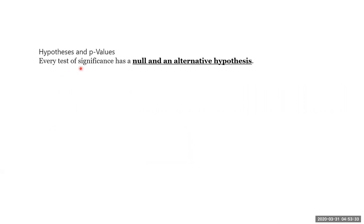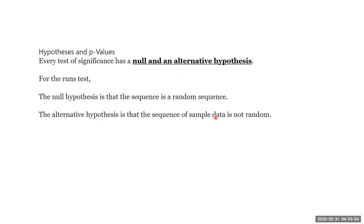Hypothesis and p-values. Every test of significance, including the run test, has a null and an alternative hypothesis. What is the null hypothesis for run test? The data is random. The data is not random is the alternative hypothesis.